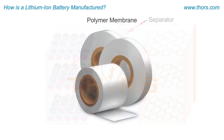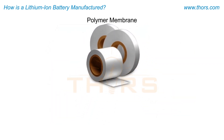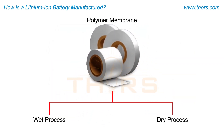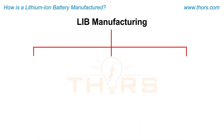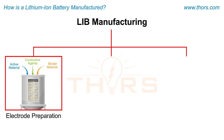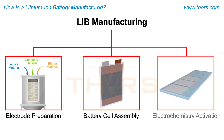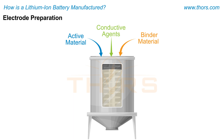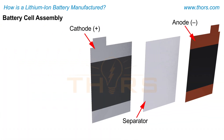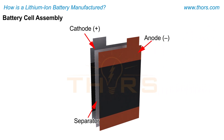The separator is typically a polymer membrane that can be manufactured using both wet and dry processes. The manufacturing of LIBs consists of three major stages: electrode preparation, battery cell assembly, and electrochemistry activation. The electrode preparation stage involves using active materials, binders, and conductive agents to form the electrodes.